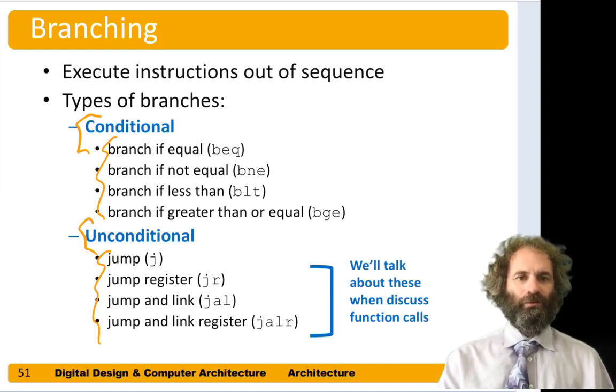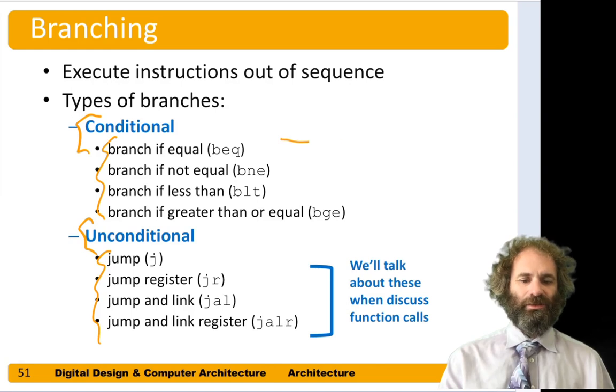There are four flavors of conditional branches: branch on equal, branch on not equal, branch of less than, or branch of greater than. All of these conditional branches take two sources, they compare them, and based on their relative values, they may take the branch or not. The unconditional jump, J, will always take the jump no matter what. And there's some other flavors of it that are used in function calls that we'll talk about later.